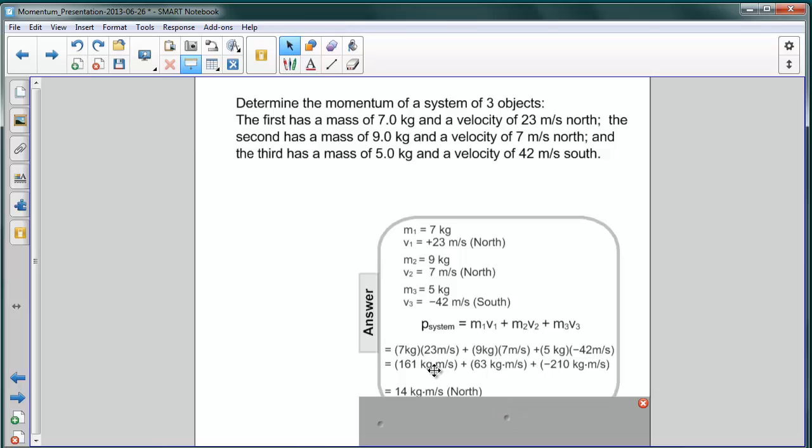We can add all of these up and we get 224 kg·m/s for the two objects moving north, and negative 210 kg·m/s for the object going south. So the net is a positive momentum for the system, therefore it's going north, 14 kg·m/s.